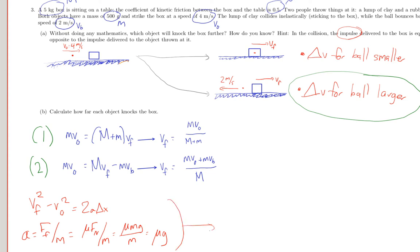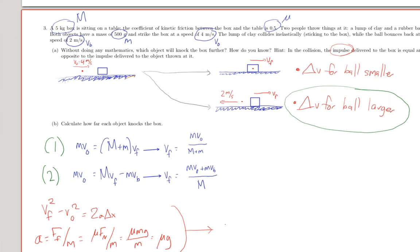So combining these two things, I get that vf squared minus v-naught squared. Is here the acceleration? Really, we should put a minus sign in here, because the acceleration is the opposite direction of the initial velocity. So that's going to be minus 2 mu g delta x.